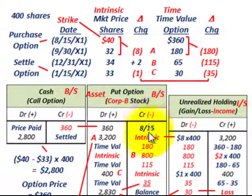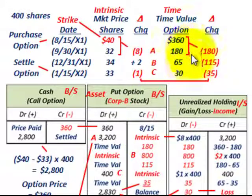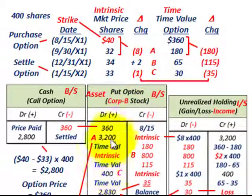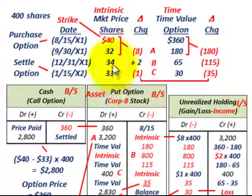The time value portion has to be accounted for too. In our case, we started out with the high value and it just decreases your put option account each period. Any negative changes in your time value portion reduce your put option account. Remember, you have to break them apart between the intrinsic portion and the time value portion when recording the put option. The put option gives you the right to sell some stock at a specific strike price — what you're aiming to do is bet that the shares go down in price, which is where the option would have some value.